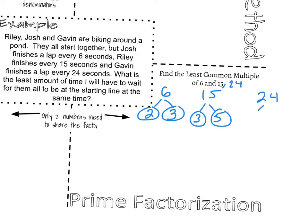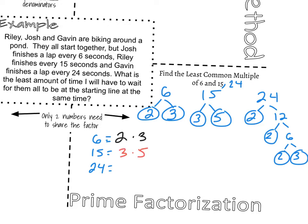15's prime factorization is 3 times 5. And then when I look at 24, multiple ways I can start, I'm going to do 2 times 12. 12 is 2 times 6. And then 6 is 2 times 3. Now what I'm going to do is I'm going to list my 3 numbers. And I'm going to write out their prime factorizations without using exponents. So 6 was 2 times 3. 15 was 3 times 5. And 24 is 2 times 2 times 2 times 3.